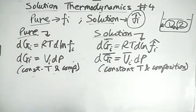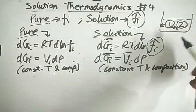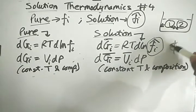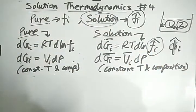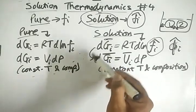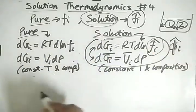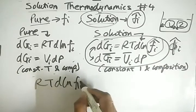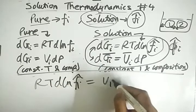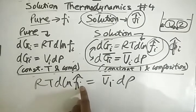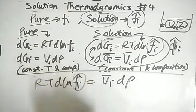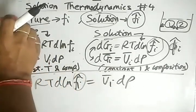What we need to find is fi-cap — or equivalently, the fugacity coefficient φi-cap in a solution. We have already handled pure compounds earlier. To find fi-cap, we equate both equations for the solution and obtain RT·d(ln fi-cap) = Vi-bar·dP.